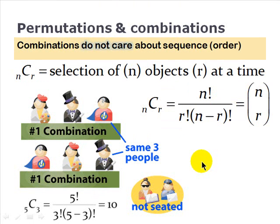Now, combinations are similar, but a combination does not care about the sequence of the order. So it is also denoted with two subscripts, n and r, but a C instead of a P, C for combination. It's a selection of n objects taken r at a time. Notice instead of arrangement, we're saying it's a selection because we do not care about the sequence or the order.